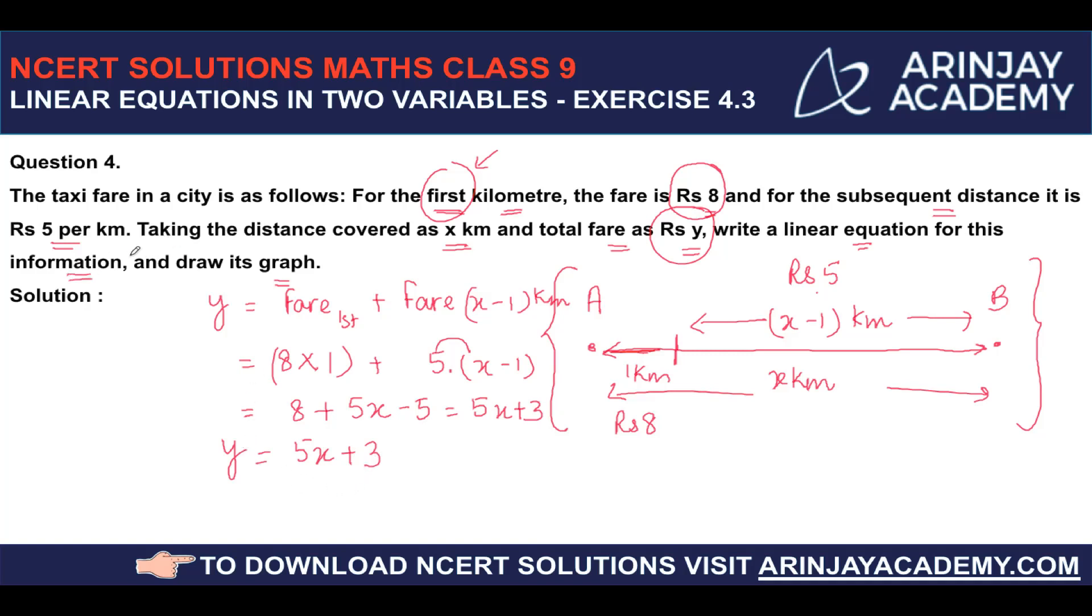First part is completed because I have found the linear equation for this information. The second is I have to draw a graph of this. For that, let's say the value of x is equal to 0. So y will be equal to 5 times 0, which is 0 plus 3 is equal to 3.